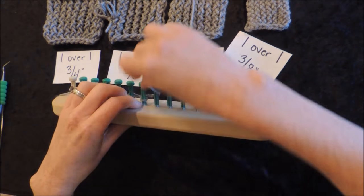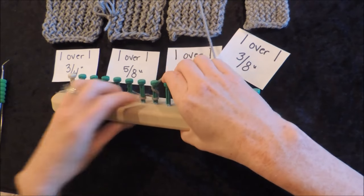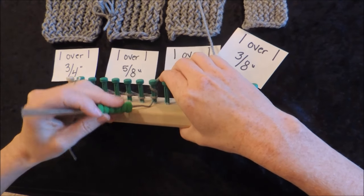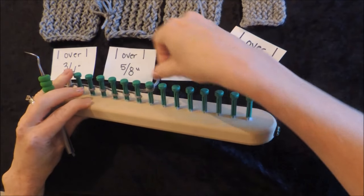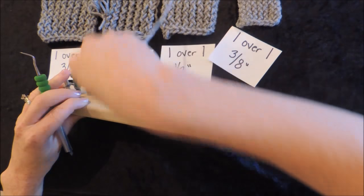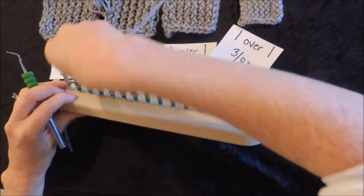If you're doing a flat panel, then you're going to wrap that last peg and pick over immediately so it stays on there and then go back because we're going to slip stitch your edge stitches.